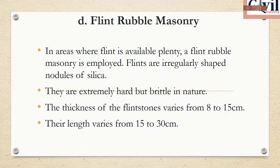Flint masonry uses flint, which consists of small nodules of silica. This material is hard but brittle. The size of flints is 8–15 cm in width and 15–30 cm in length.